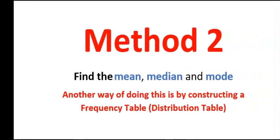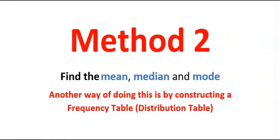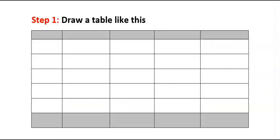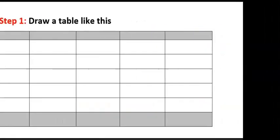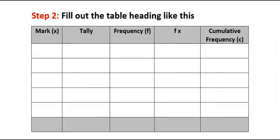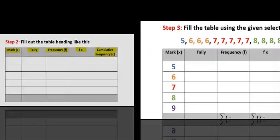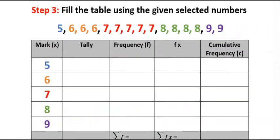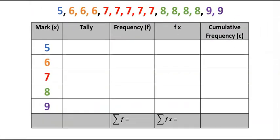Method 2 is by constructing a frequency table. Step 1: draw a table like this. Step 2: fill out the table heading like this, starting with the class mark, the tally, the frequency, the frequency multiplied by the class mark, and the cumulative frequency.